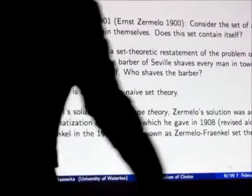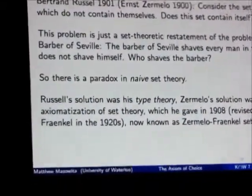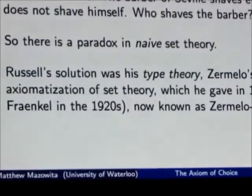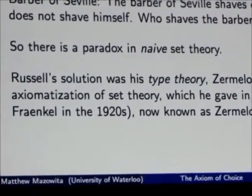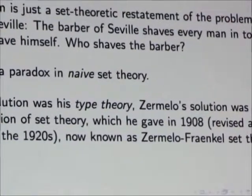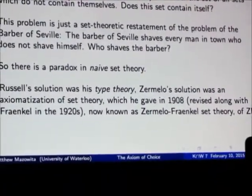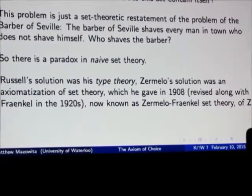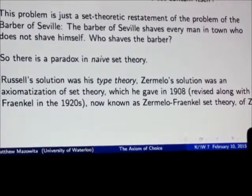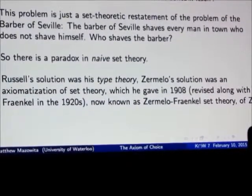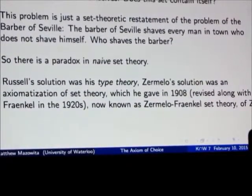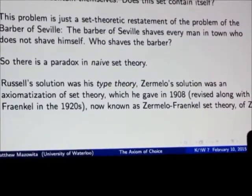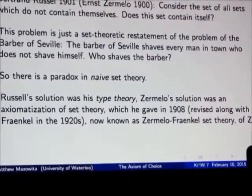The solution to this, well, there were a few solutions. Russell's solution was type theory, which we heard about last month. A different solution was proposed by Ernst Zermelo in 1908, and then it was revised with another guy named Fraenkel in the 1920s, and now this is known as Zermelo-Fraenkel set theory, or ZF. With the axiom of choice added, this is the dominant foundation of mathematics that working mathematicians use today.